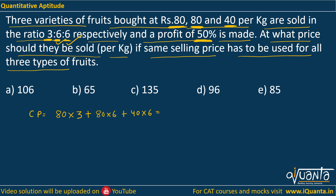This gives us 240 + 480 + 240, which equals 960 rupees. We were given that a profit of 50% is made, so the selling price would be 1.5 times the CP — the multiplying factor is 1.5. So 1.5 × 960 gives a total SP of 1440 rupees.